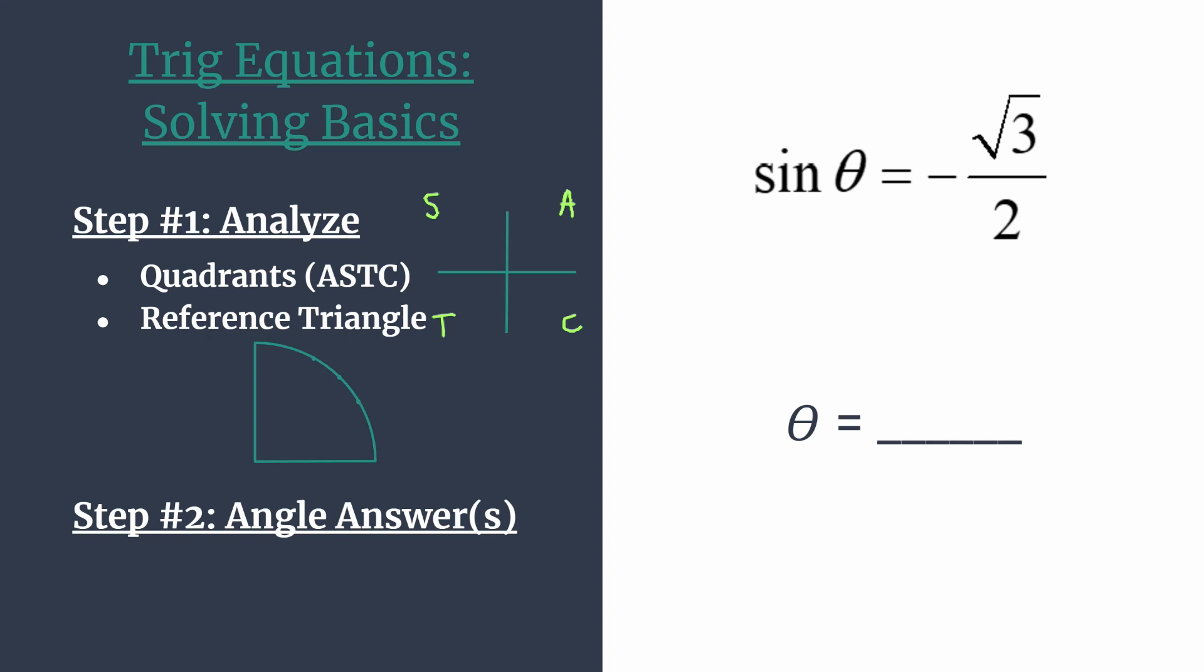Looking back to our problem, we're looking for a sine that's negative root 3 over 2. So we want our sine to be negative. That means we can't be in 1, we can't be in 2, we must be in 3. So let's sketch that in, just a quick little terminal side for an angle here, and in quadrant 4. So we have our quadrants.